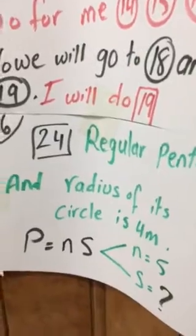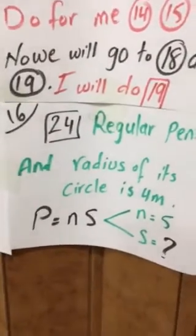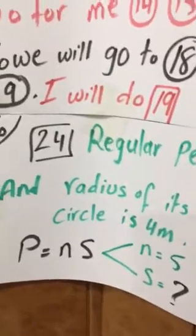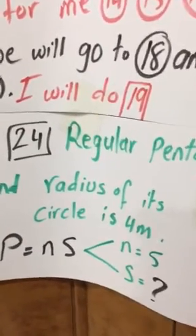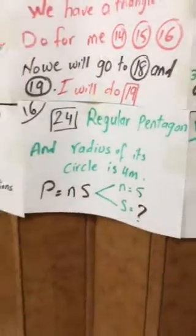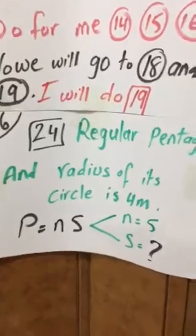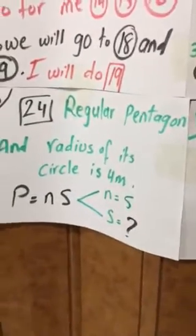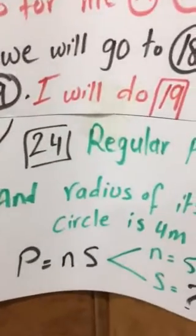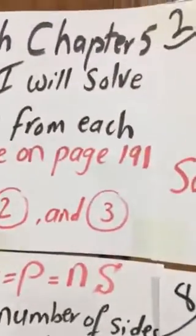He has a regular pentagon, yes, and radius of its circle is 4 meters. Maybe this question is the first time you have something about a circle, but don't be panic. I will show you how is the way.